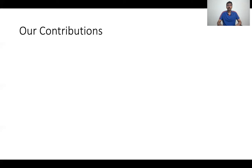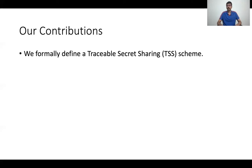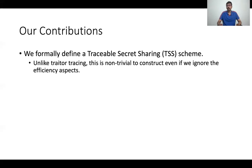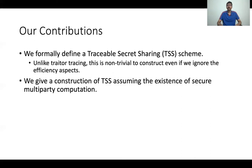In this work, we formally define a traceable secret sharing scheme. Unlike the related notion of traitor tracing in a broadcast encryption scheme, traceable secret sharing is not trivial to construct even if we ignore the efficiency aspects. Recall that a traitor tracing scheme can be trivially constructed from any public key encryption if you allow the public keys and the ciphertext to grow with the number of users. However, this is not the case for traceable secret sharing. Our main contribution is a construction of a traceable secret sharing assuming the existence of a secure multi-party computation protocol.